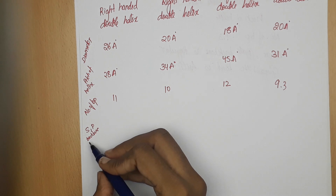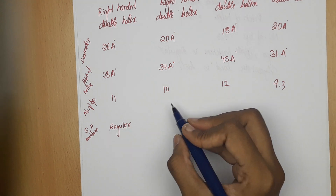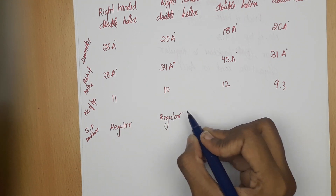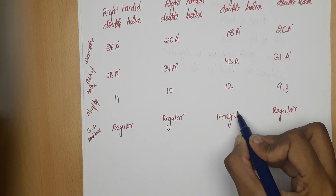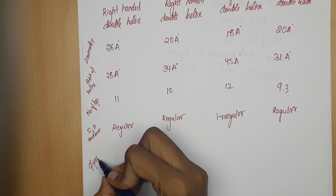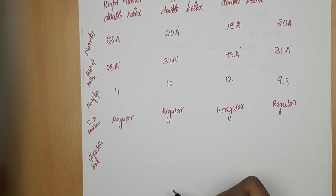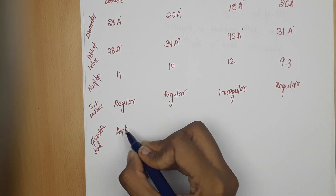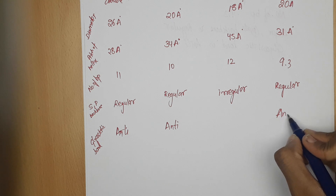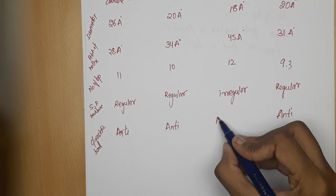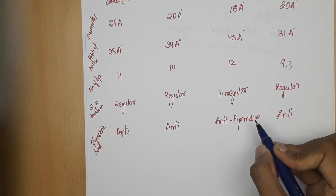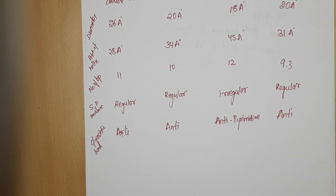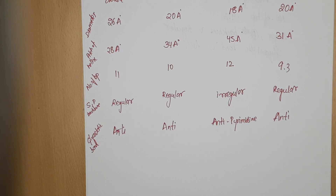Sugar and phosphate backbone: regular in A-DNA, B-DNA, and C-DNA; irregular in Z-DNA. Glycosidic bond: anti in A-DNA, B-DNA, and C-DNA; in Z-DNA it is different — anti only for pyrimidines. The major and minor grooves for each form have already been described while explaining A, B, Z, and C-DNA.